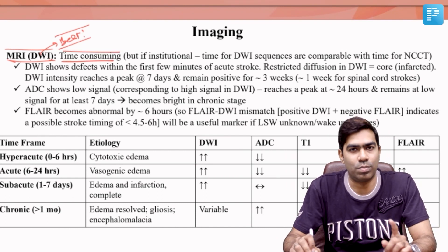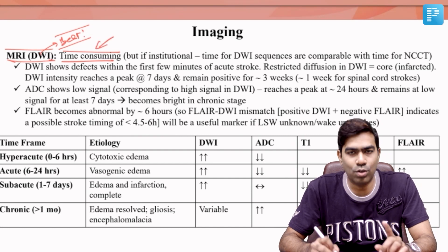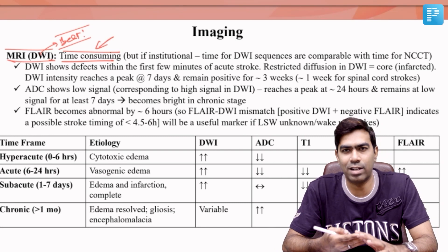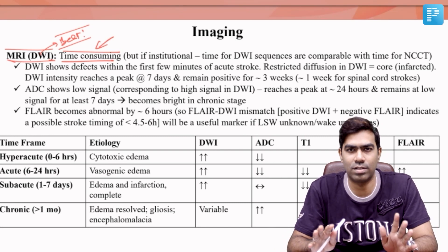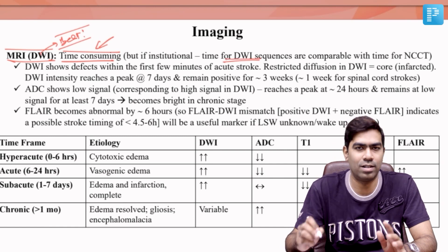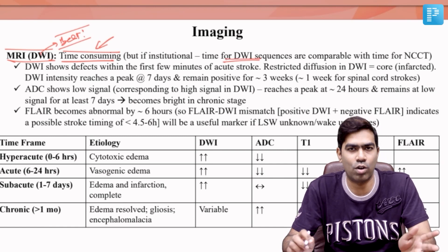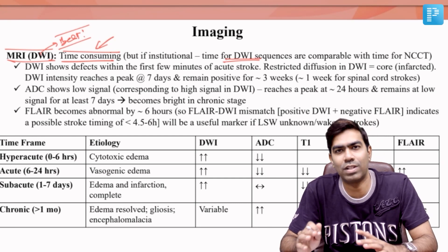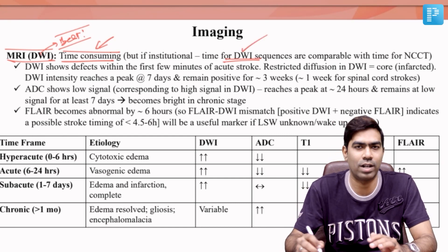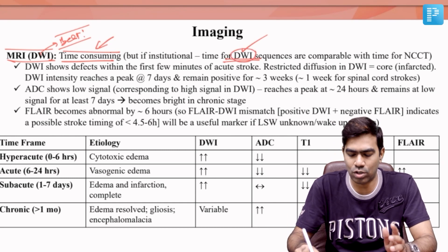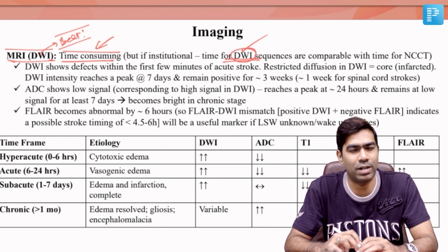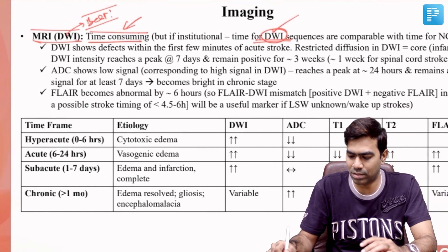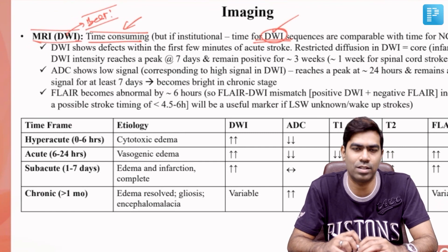MRI is time-consuming only if you do all the sequences — T1, T2, FLAIR, DWI, ADC. But if you do only the DWI sequence, the time taken is comparable to that of NCCT. So if it's an institutional setting with a 24/7 radiologist, it's better to do MRI instead of NCCT. But according to current guidelines, the first investigation is always NCCT.